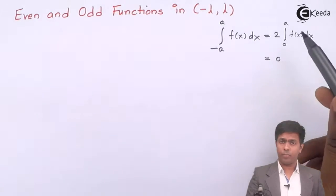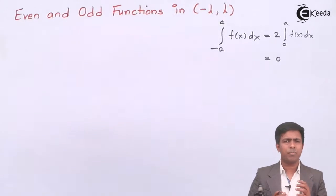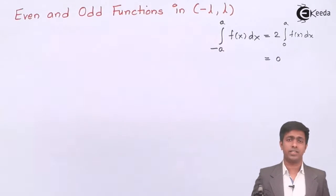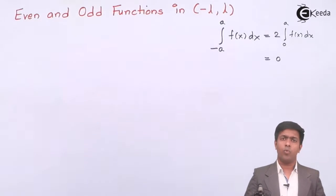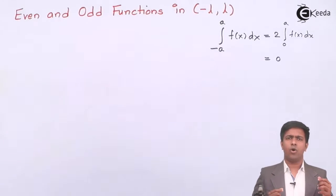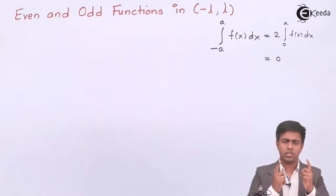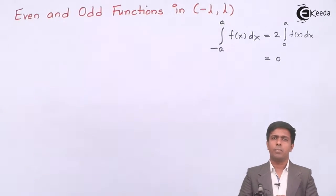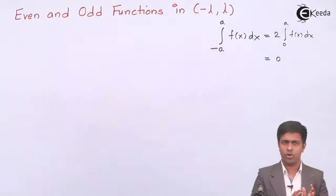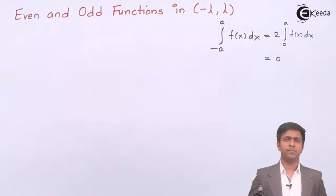We can use this same property while finding the Fourier series in the range negative l to l. Whenever you get a range or interval as minus l to l in Fourier series, your first task is to check whether the given function f of x is even or odd, because that is the fastest way to get the Fourier series.